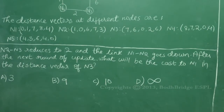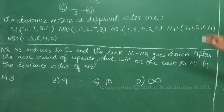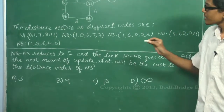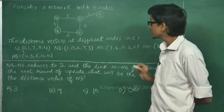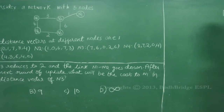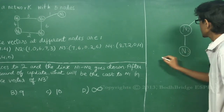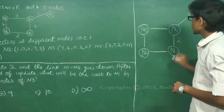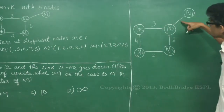The next part: the distance between N2 and N3 reduces to 2, and the link N1-N2 goes down. After the next round of updates, what will be the cost to N1 in the distance vector of N3? In this question, the link between N2 and N1 goes down. The distances N2-N3 = 2, N3-N4 = 2, N1-N5 = 4 (via N5), and the N1-N2 link fails. So the graph has nodes N1, N2, N3 with link N2-N3 = 2, link N3-N4 = 2, and link N1-N5 = 3 and N5-N2 = 4 remaining.